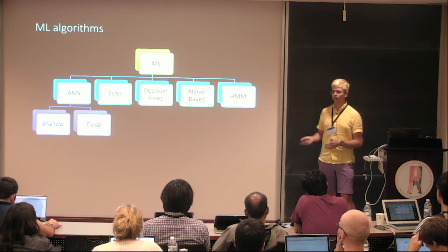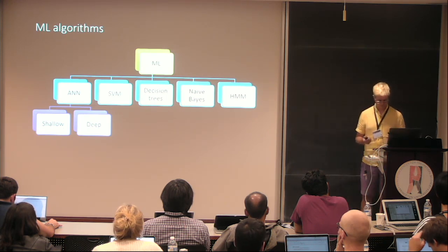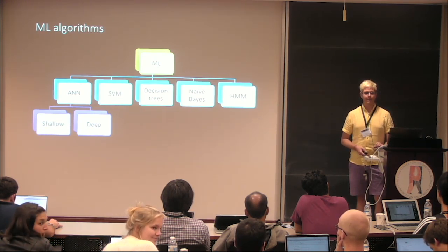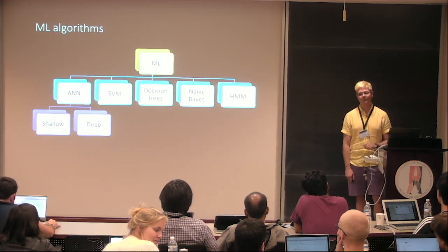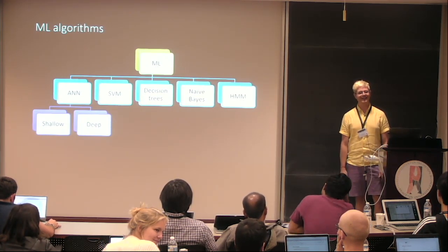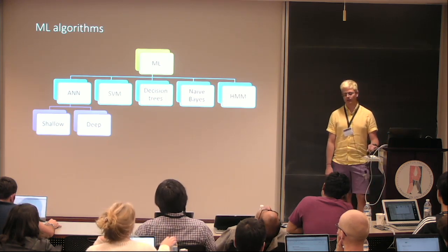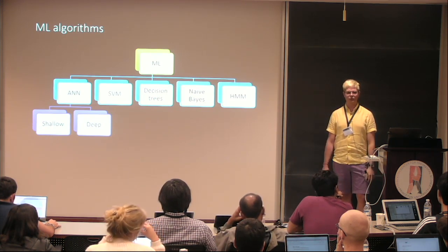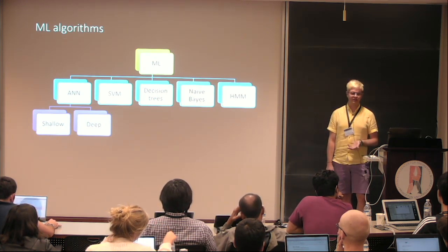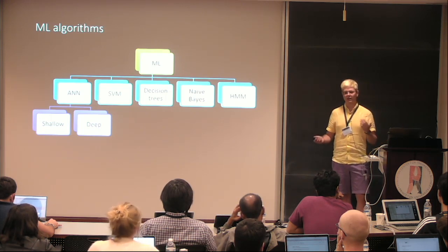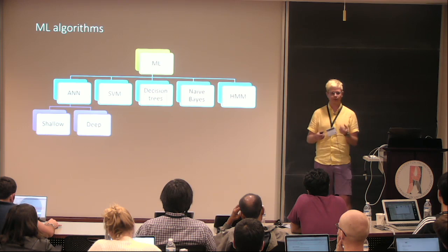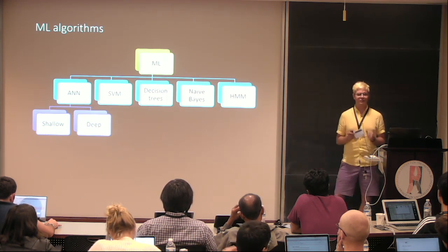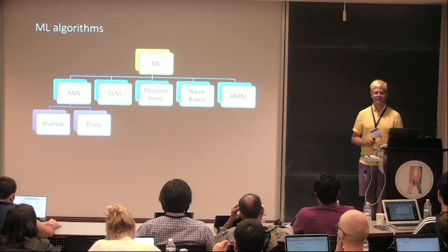Is there a standard metric for deciding whether a network is shallow or deep? Let's say one layer is shallow. More than one layer — a few layers. It depends on which domain you're talking about. For image classification, I would say everything above five layers is deep, less than five is shallow. For audio you may have different numbers. I think it's very dependent on the kind of input you feed these networks. This is just an introduction, so let's not focus too much on those little details.